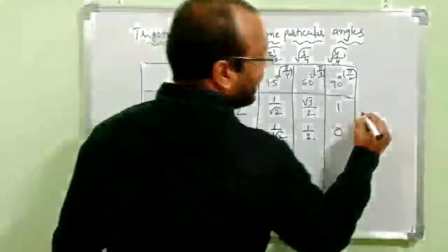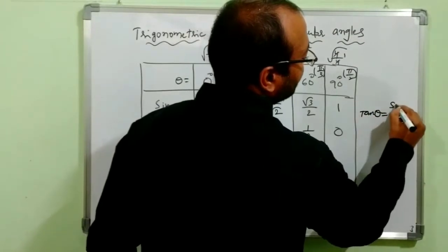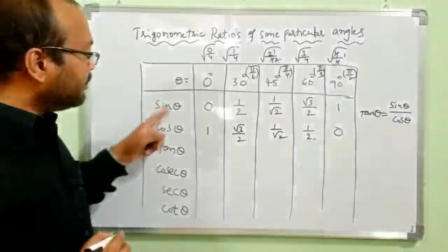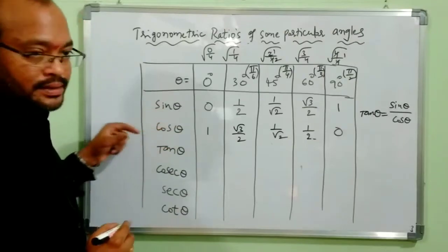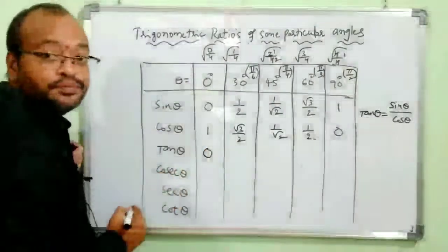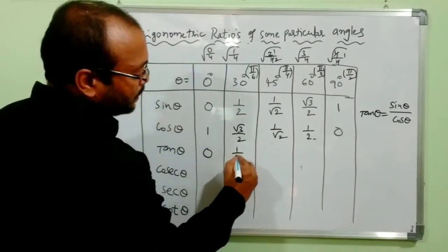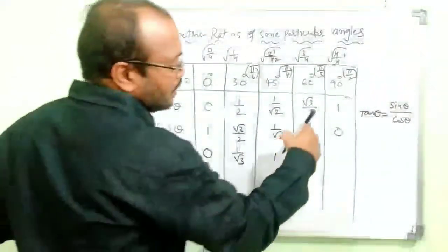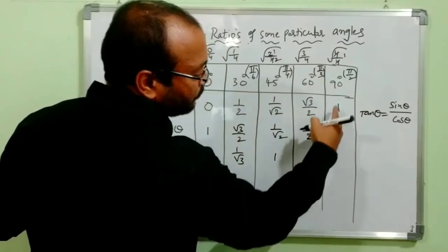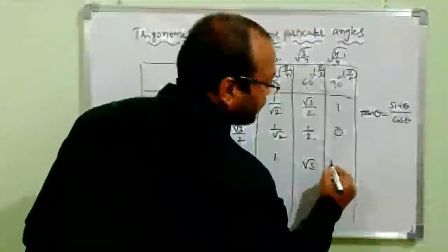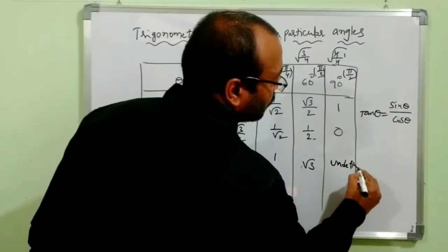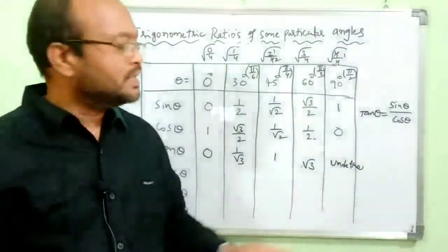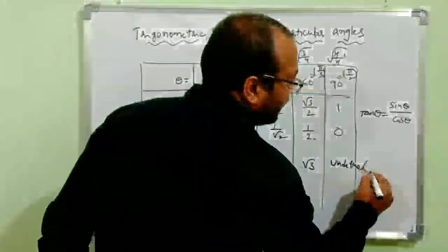Now tan. We already know that tan θ = sin θ / cos θ. Using the values we have: tan 0° = 0/1 = 0. Tan 30° = (1/2)/(√3/2) — the 2s cancel — = 1/√3. Tan 45° = (1/√2)/(1/√2) = 1. Tan 60° = (√3/2)/(1/2) — the 2s cancel — = √3. Tan 90° = 1/0, which is undefined. Sometimes we also write it as infinity.